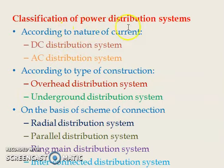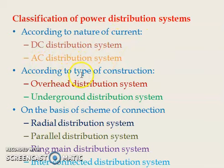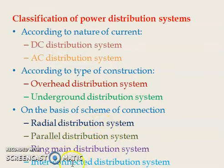Classification of power distribution systems: according to the nature of current, we classify into DC distribution system and AC distribution system. According to the type of construction, we have overhead distribution system and underground distribution system. On the basis of scheme of connection, we have radial distribution system, parallel distribution system, ring main distribution system, and interconnected distribution system.